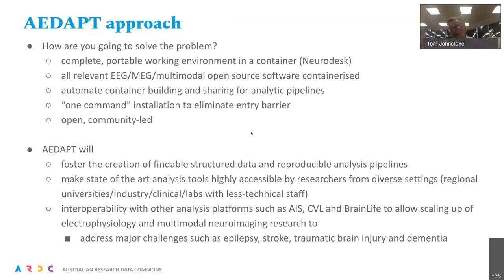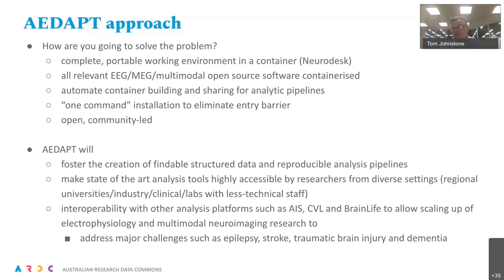Through this, we hope to foster the creation of far more findable structured EEG and MEG reproducible analysis pipelines — which really lag behind neuroimaging — and create a platform accessible by researchers from a wide diversity of settings, including regional universities and small labs with fewer technical staff. We've built in interoperability with other analysis platforms such as the Australian Imaging Service, the Characterisation Virtual Library, and Brain Life from the NIH in the United States. The data itself is extremely valuable in fields such as epilepsy, stroke, traumatic brain injury, and dementia.